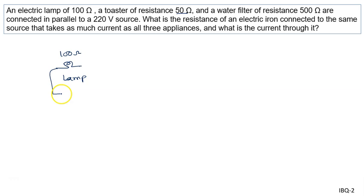Now there is a toaster with resistance given to us as 50 ohm, and this is the water filter of resistance 500 ohm. All are connected in parallel like this to a 220 volt supply. This is the 220 volt supply.